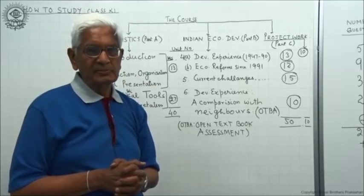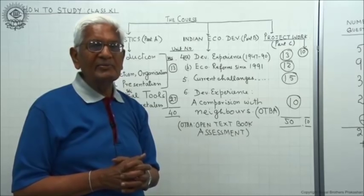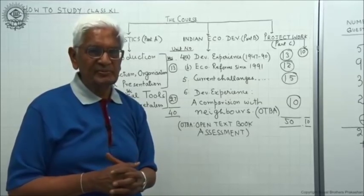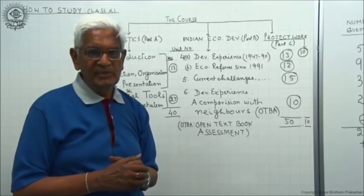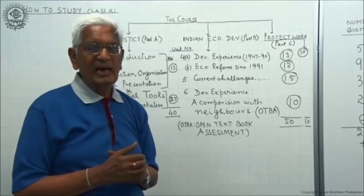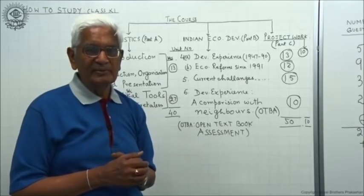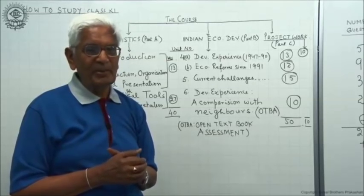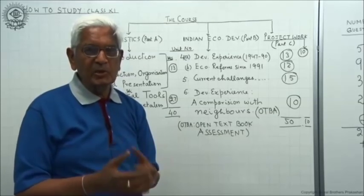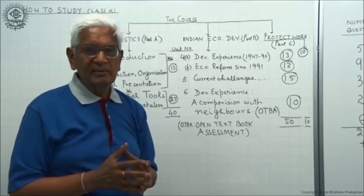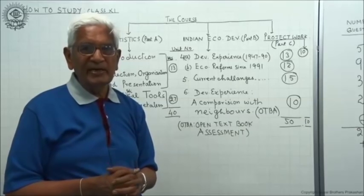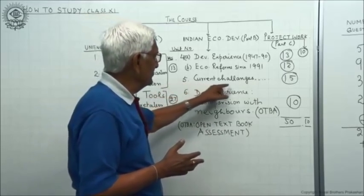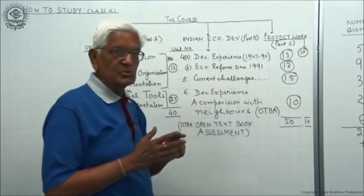Unit number five covers the current problems and challenges facing the country. How is our government trying to face these challenges? For example, poverty is a big challenge — how to remove it. Unemployment is a big challenge. Inflation — the rise in prices — is an even bigger challenge, and we study what measures have been taken to control prices. We also examine challenges in agriculture, industry, and foreign trade. This unit constitutes 15 marks.